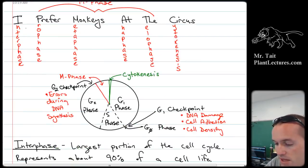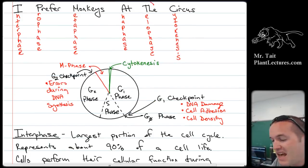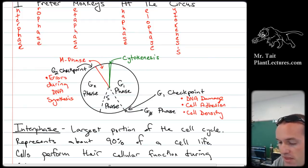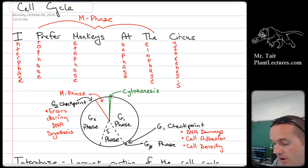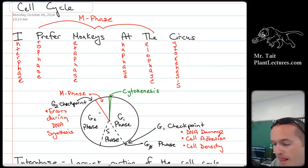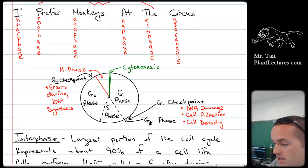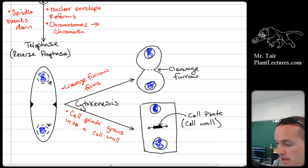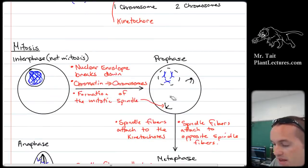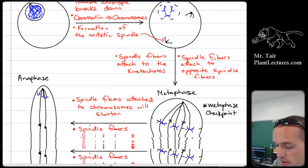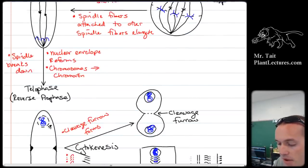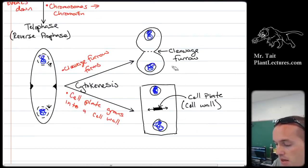Then we talked about the cell cycle. We said 'I prefer monkeys at the circus' — that's interphase, prophase, metaphase, anaphase, telophase, and cytokinesis. Prophase through telophase is mitosis, and interphase is the longest part of the cell cycle. Interphase is G1, S, and G2. G1 phase is where the cell grows after splitting. S phase is where it duplicates its DNA. G2 is when it grows to get ready to split again. In mitosis, chromosomes only exist in chromosome form during mitosis — every other time they're in chromatin form. Metaphase is when they line up on the metaphase plate and then get yanked apart. The difference between cytokinesis in an animal cell is that it forms a cleavage furrow, while in a plant cell it forms the cell plate.